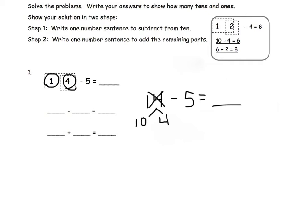In step 1 we write one number sentence to subtract from 10. So we start with our 10 and we subtract the 5. So 10 minus 5 equals 5.